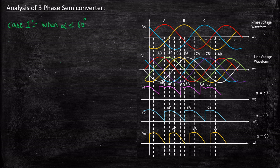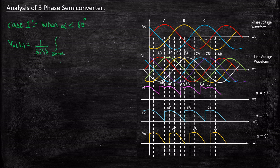In this case, V_out DC can be written as one by total time period. The total time period here is 120 degrees, because if you consider alpha less than 60 degrees — that is this particular waveform — the output voltage starts at 60 degrees and remains till 180. So 180 minus 60 is 120 degrees, which is 2π/3. The minimum angle where we can start alpha triggering is 30 degrees plus alpha.